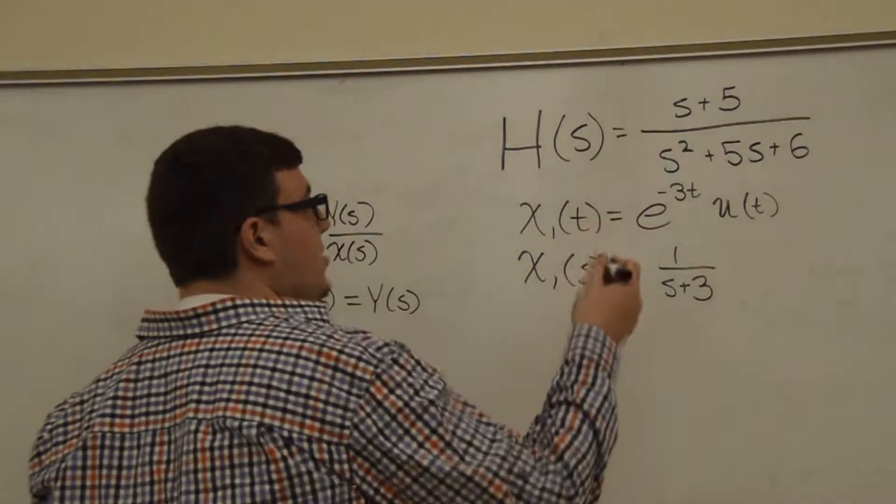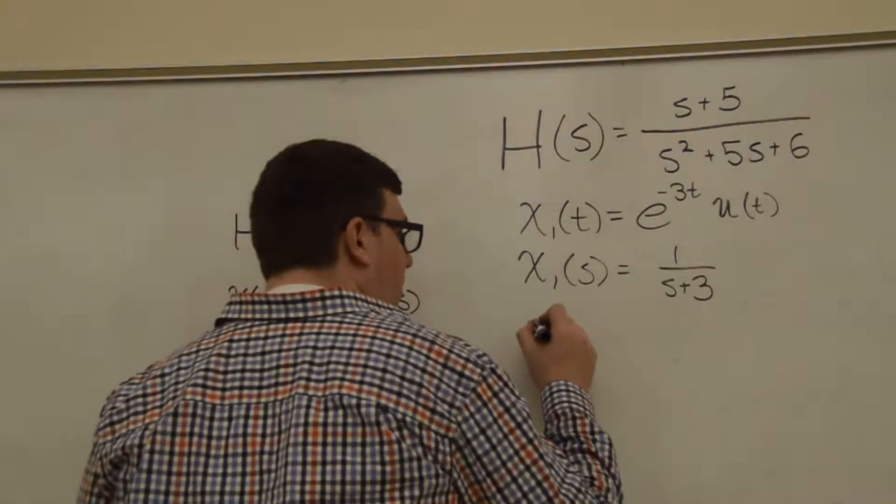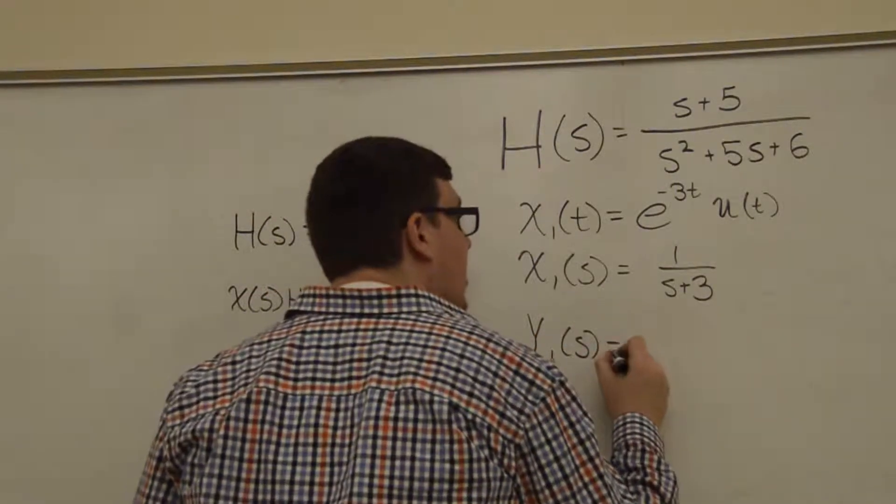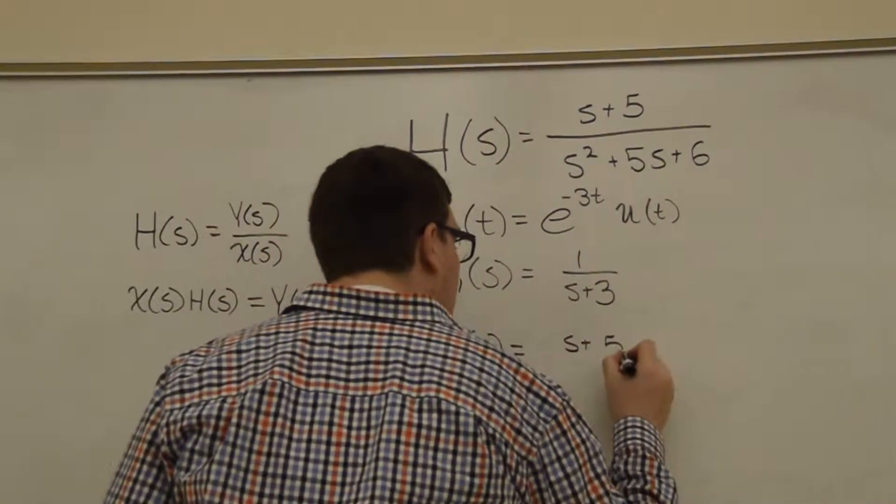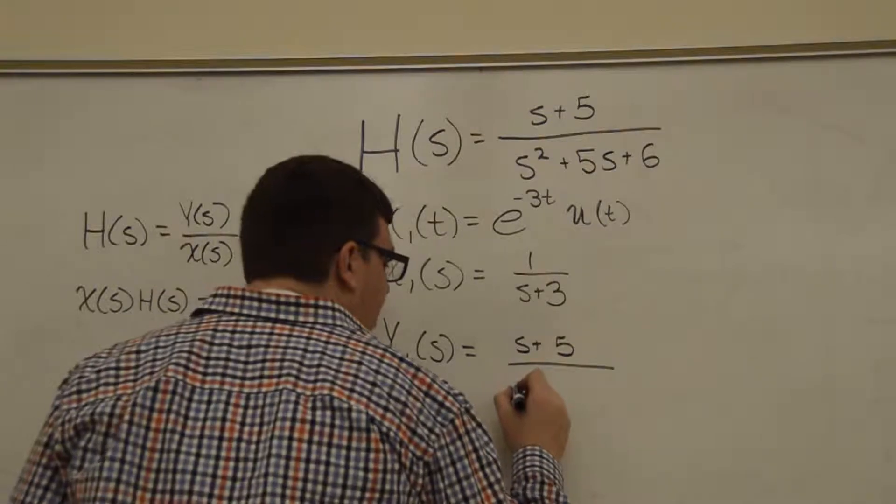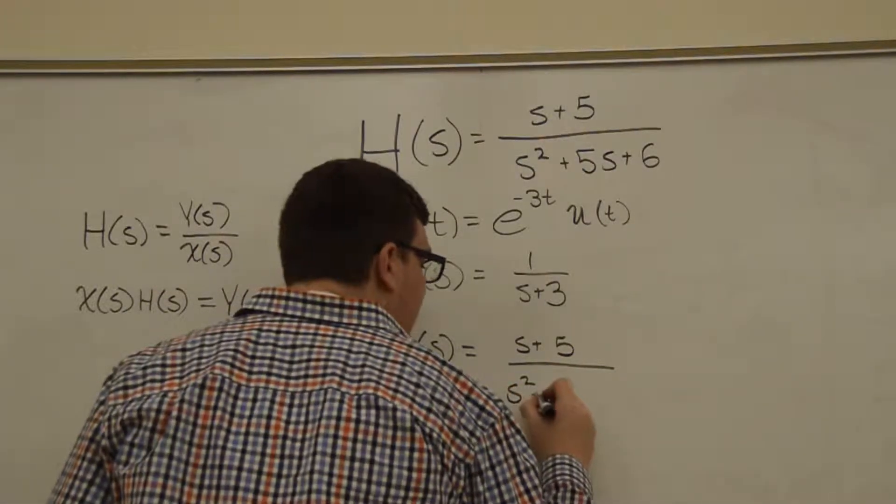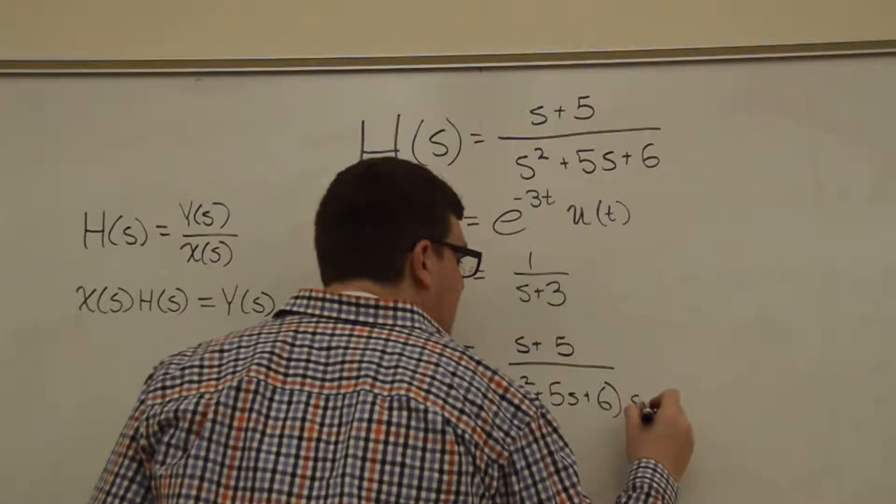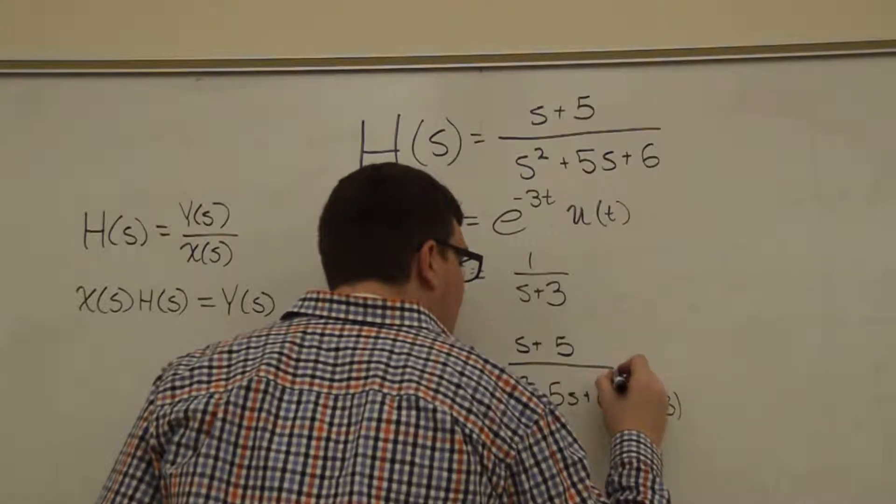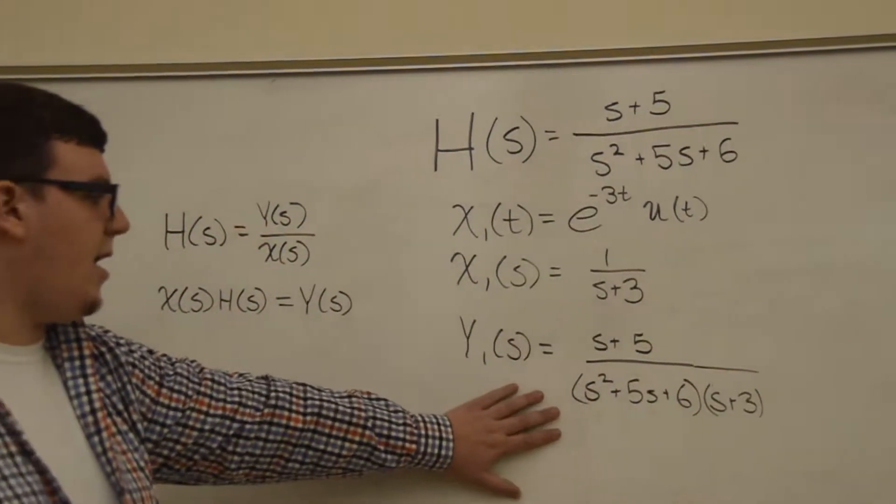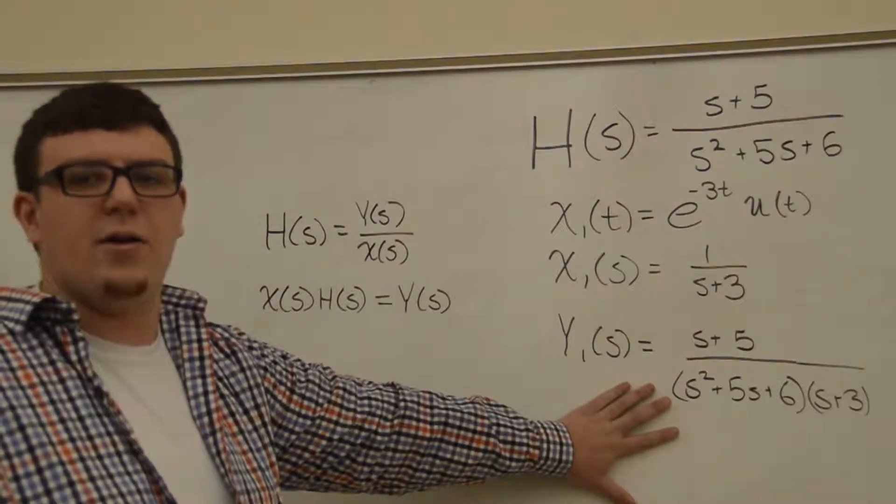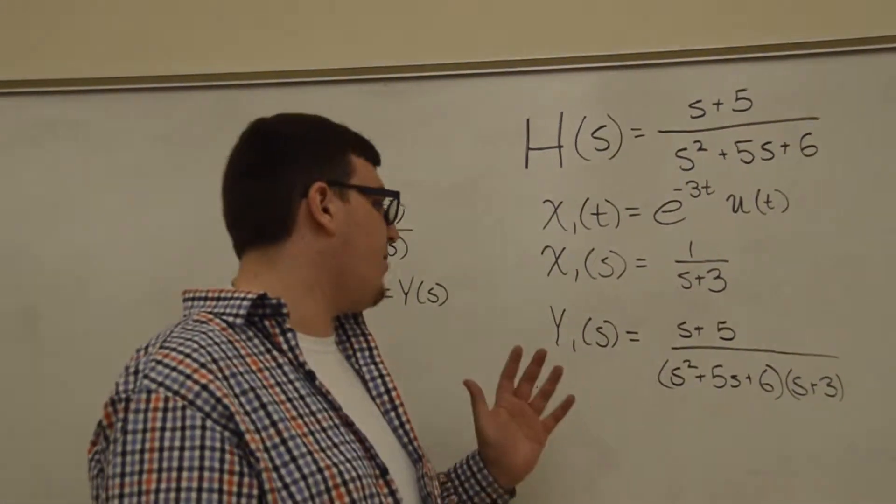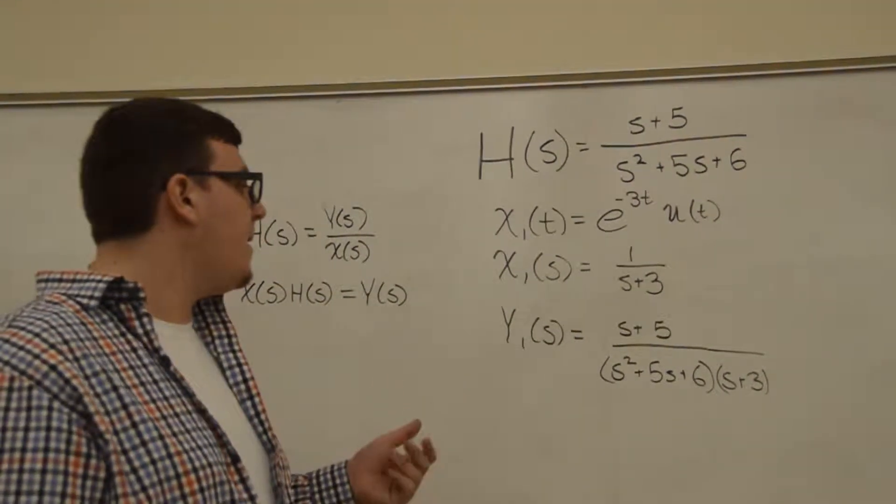So once we have this, we should multiply it by H(s) to get Y(s). So our output Y₁(s) is going to equal (s+5) over (s²+5s+6)(s+3). That means we're going to have a third order polynomial on the bottom here, and there's no really easy way to take the inverse Laplace transform of a third order polynomial.